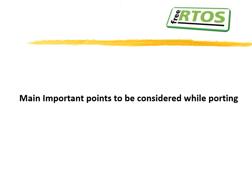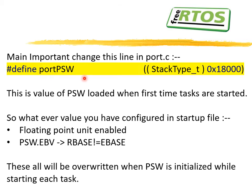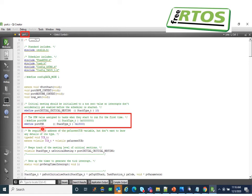The most important point to consider while porting is that you have to define the PSW default value. This is the PSW value loaded the first time a task starts. Whatever configuration you have done in your startup file — like enabling the floating point unit or changing the RBASE and EBASE address in the PSW register — that will not have any significance, because during the first start of any task this default value defined in port.c will be loaded. So you must set this default PSW value as per your requirements.